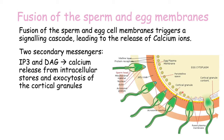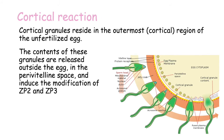The contents of the cortical granules are expelled out of the outermost area of the egg — this is the cortical reaction. The enzymes of the cortical granules are released outside the egg and cause a modification in ZP2 and ZP3, the zona pellucida proteins 2 and 3. Since they are modified, sperm can no longer bind to these proteins, and hence only one sperm can fertilize the egg.